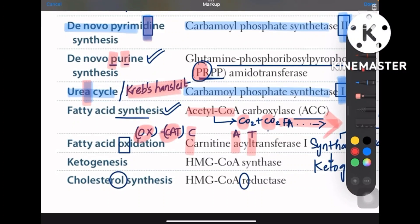Coming to ketogenesis and cholesterol synthesis, genesis is again about synthase, that is HMG-CoA synthase, whereas cholesterol synthesis is HMG-CoA reductase. Remember cholesterol has R in it and HMG-CoA reductase also has R in it, so RE and RE.